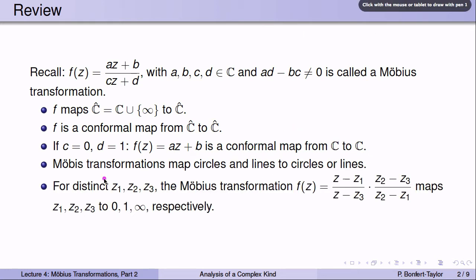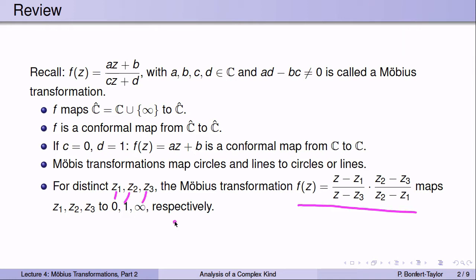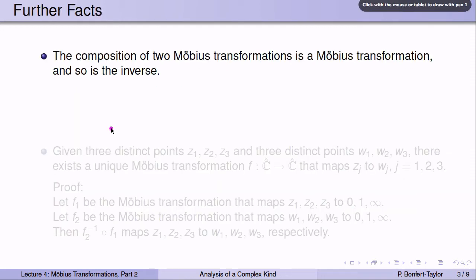Finally, we showed that given three distinct complex numbers z1, z2, and z3, there exists a Möbius transformation that maps z1 to 0, z2 to 1, and z3 to infinity. We can actually write down this Möbius transformation, and it is given by the formula shown here. Today, we want to construct some actual Möbius transformations. Before we go there, let's prove a few more facts.